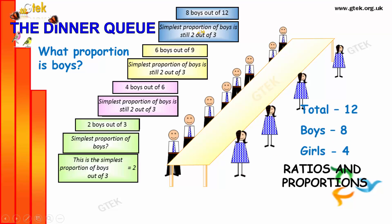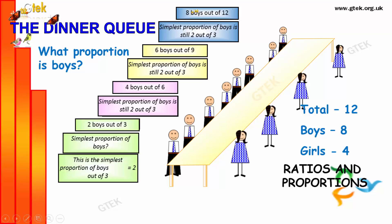Now, 2 boys out of 3 — the simplest proportion is 2 out of 3. Here 4 out of 6, divided by 2, you will get 2 out of 3. 6 boys out of 9, divided by 3, you will get 2 out of 3. 8 boys out of 12, divided by 4, you will get 2 out of 3. So the proportion of boys is 2 out of 3.